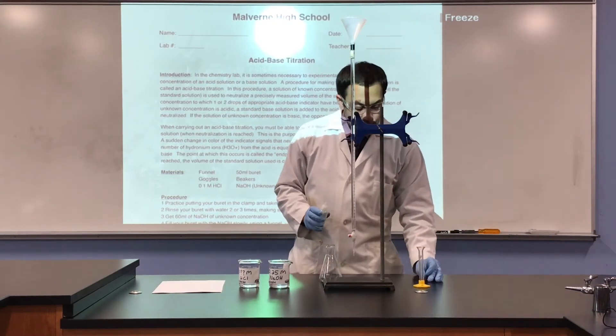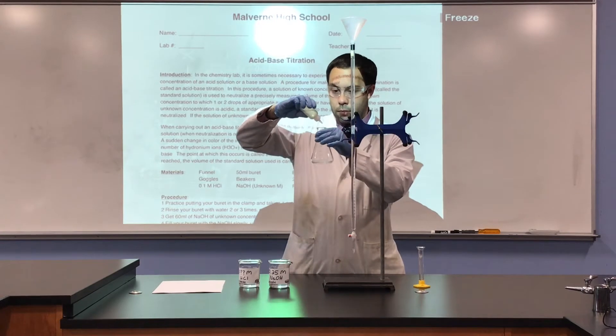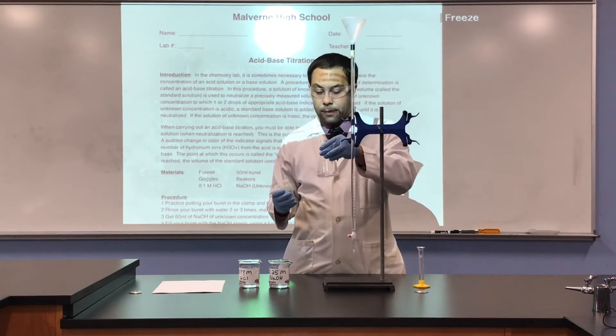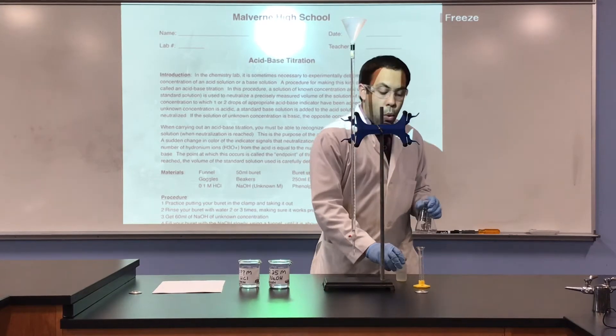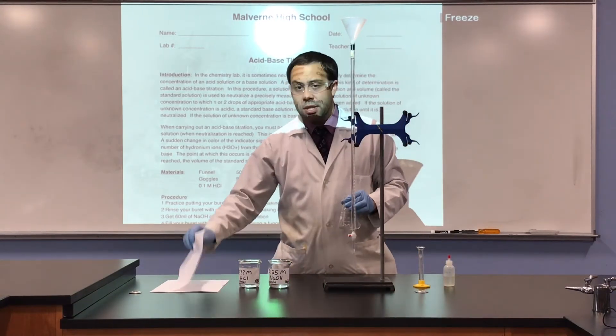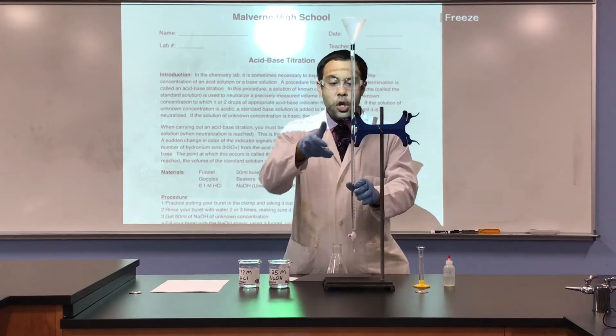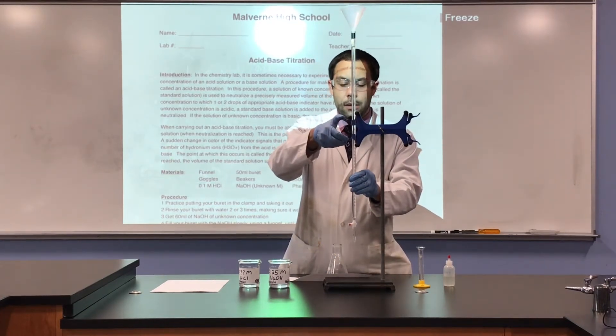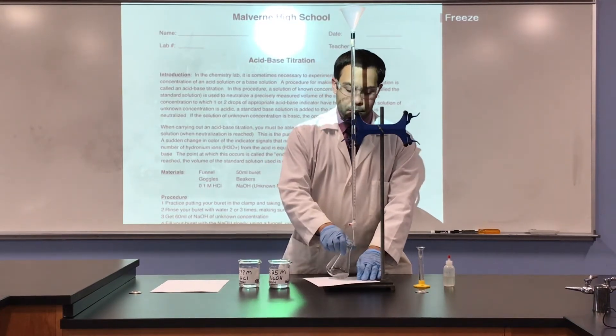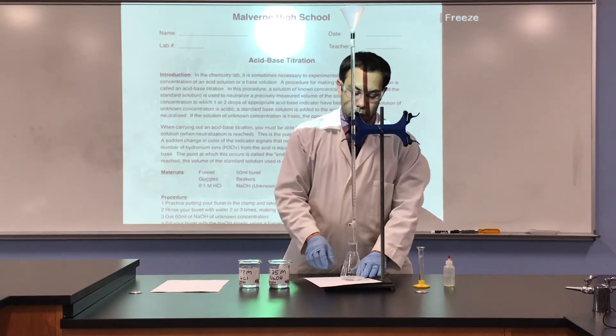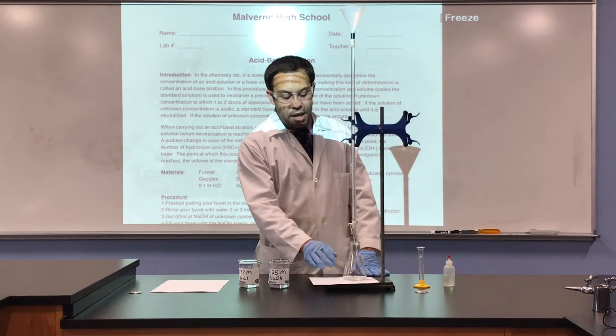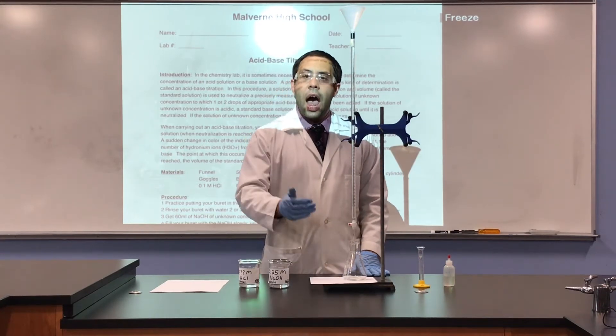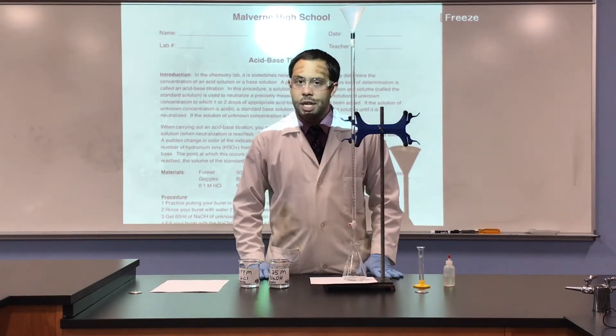Set the graduated cylinder aside for later. And also add two drops, or three drops in this case, of phenolphthalein. We're also going to use a piece of computer paper so we can determine when the phenolphthalein turns a light pink. It will be easier to see off of this white background. I'm going to move the camera closer so we can see the procedure.